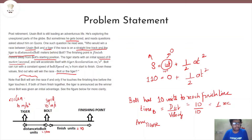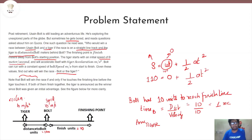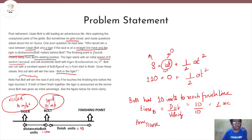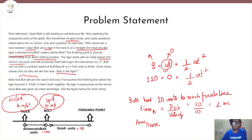In this diagram I have replaced the values from the first sample case. The sample cases follow the format: finish units, distance_to_Bolt units, Tiger acceleration in meters per second squared, and Bolt speed in meters per second. Since Bolt's speed is 10 meters per second, Tiger acceleration is 10 meters per second squared, distance_to_Bolt is 100 units, and finish is 10 meters away from Bolt's initial position — I have replaced all these values in the diagram accordingly.